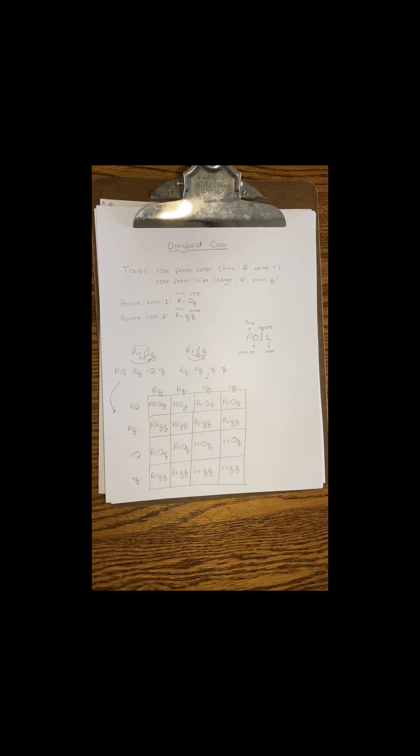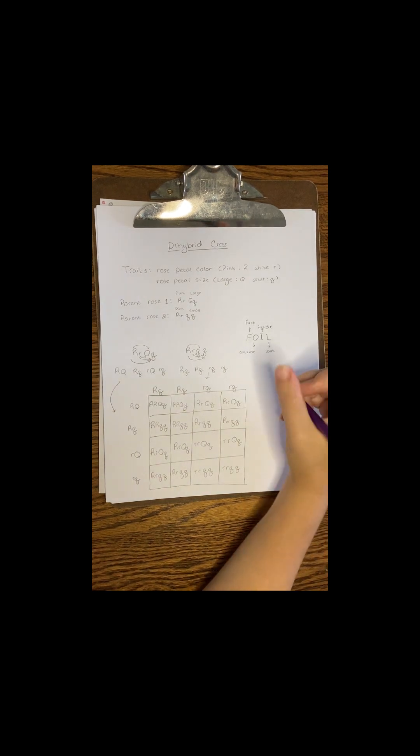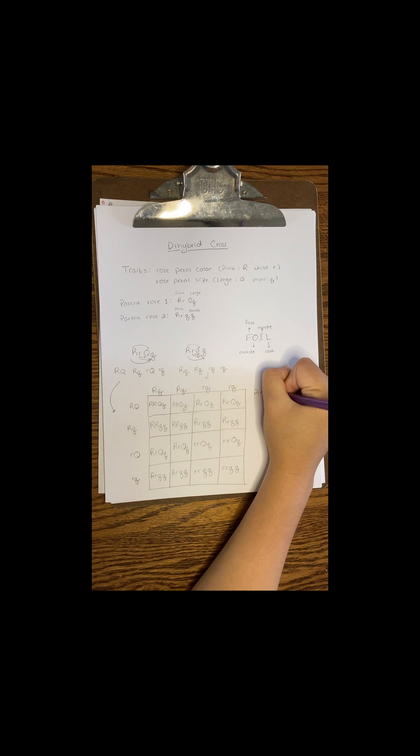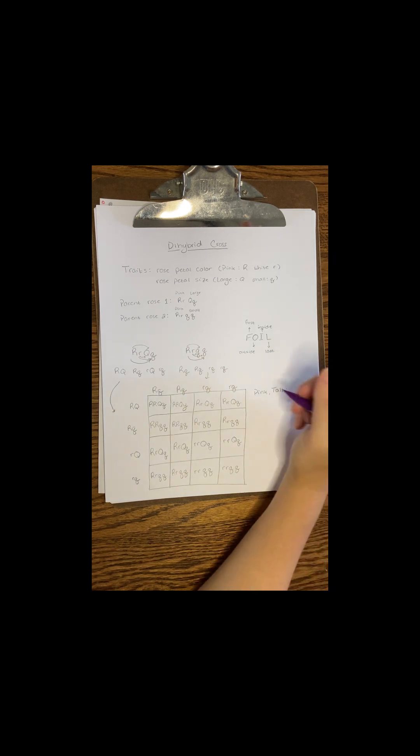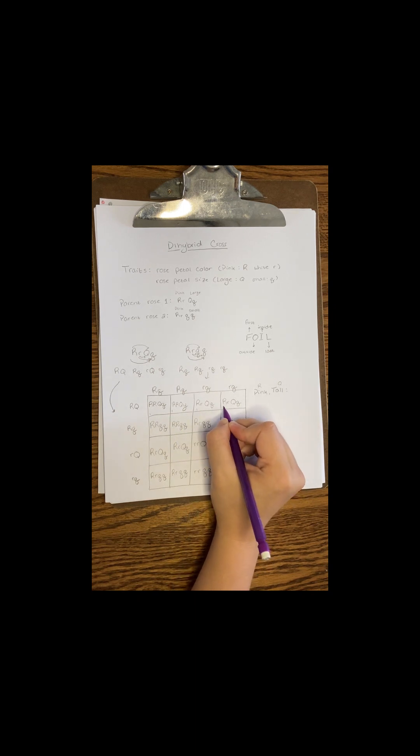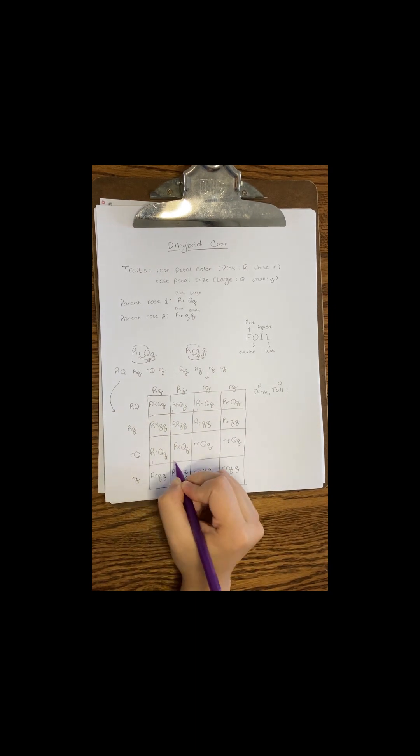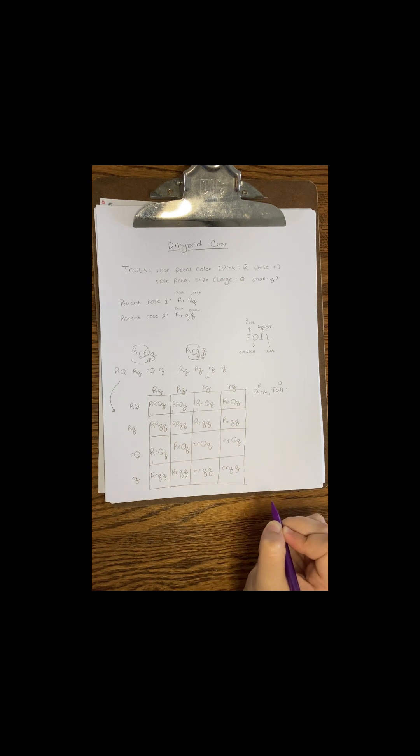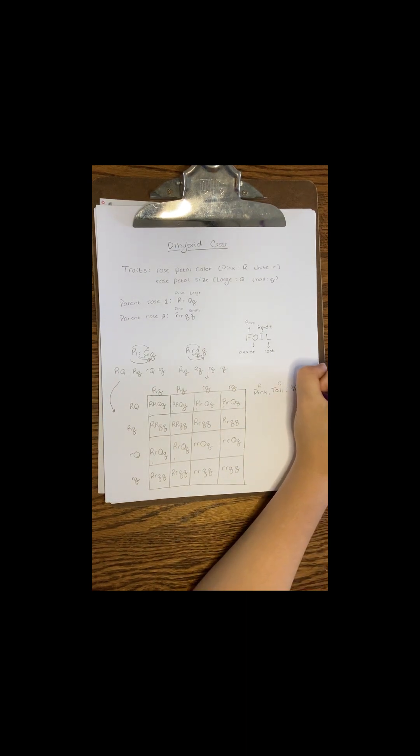Let's interpret this. To figure out how many of these offspring will have pink, large petals, we need to count how many boxes have at least one capital R and at least one capital Q. Also I apologize, I started using the words tall and short instead of large and small, but it should say large and small, so I'm sorry for the confusion here. I counted 6 out of 16 boxes with this combination, and we can reduce that fraction to 3 eighths of the offspring.